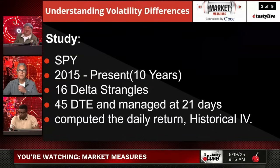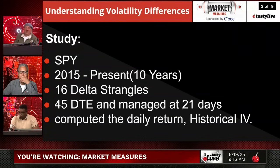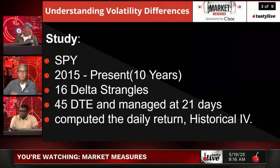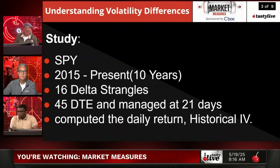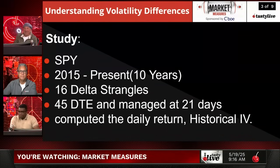We looked at the SPY — 10 years of data, 16-delta strangles, 45 days to expiration, managed at 21 days. We computed the daily return and the historical volatility. This will show the step-by-step process of how we get historical volatility.